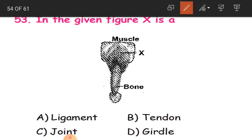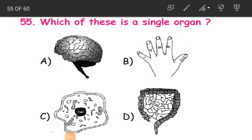Question 53: In the given figure, X connects a muscle and a bone. What is X? The options are ligament, tendon, joint, or girdle. It is a tendon - which connects the muscle and the bone.